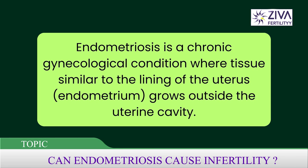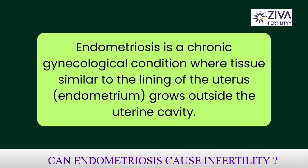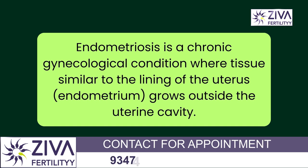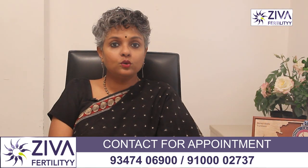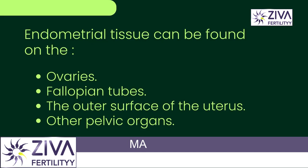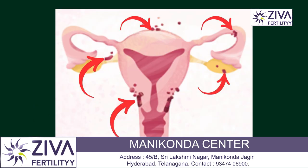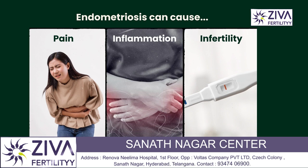Endometriosis is a chronic gynecological condition where tissue similar to the lining of the uterus, which is called the endometrium, grows outside the uterine cavity. This ectopic endometrial tissue can be found on ovaries, fallopian tubes, the outer surface of the uterus and other pelvic organs. Endometriosis can cause pain, inflammation and infertility.